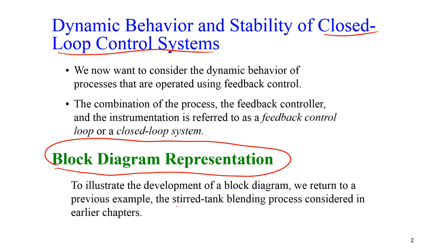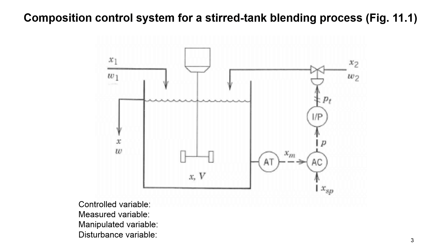We're going to use a stirred tank blending process considered in earlier discussion. We have some disturbances here like X1 and W1. W1 is our flow rate, X1 is our composition. We might have another stream coming in as well, controlled by a valve. We have an analyzer transmitter — that's also a concentration transmitter or concentration controller. So we have a CC or CT.